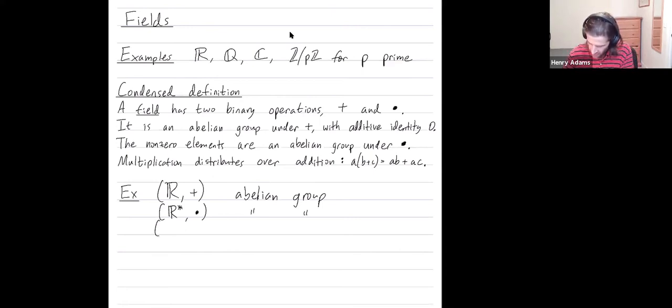Then the same thing happened for the rational numbers. Under addition, that was an abelian group. And if you remove zero, under multiplication, that was an abelian group.